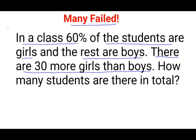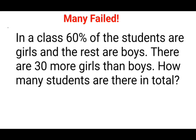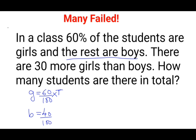Let's understand this entire sum step by step. We can see 60% are girls, so I can say 60 upon 100. Let the total of the class be T. Similarly, if 60% are girls, then 40% will be boys, because they are saying the rest are boys. So obviously 40% will be boys — but 40% of the total.